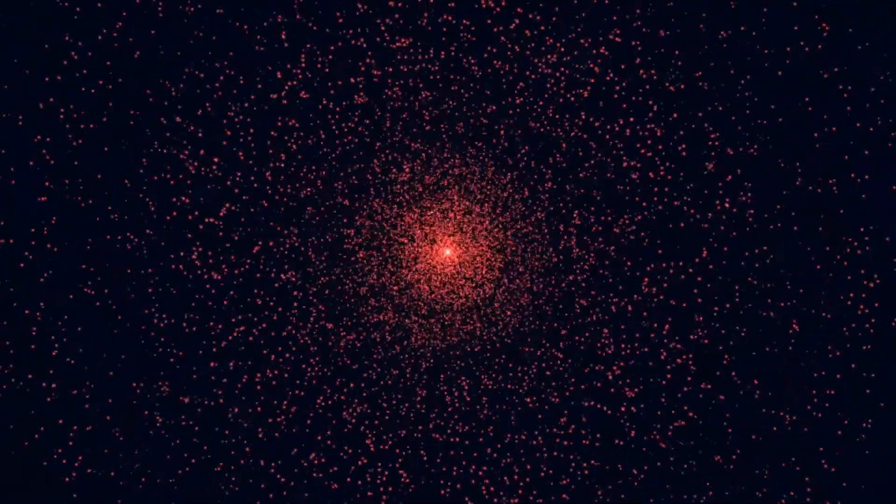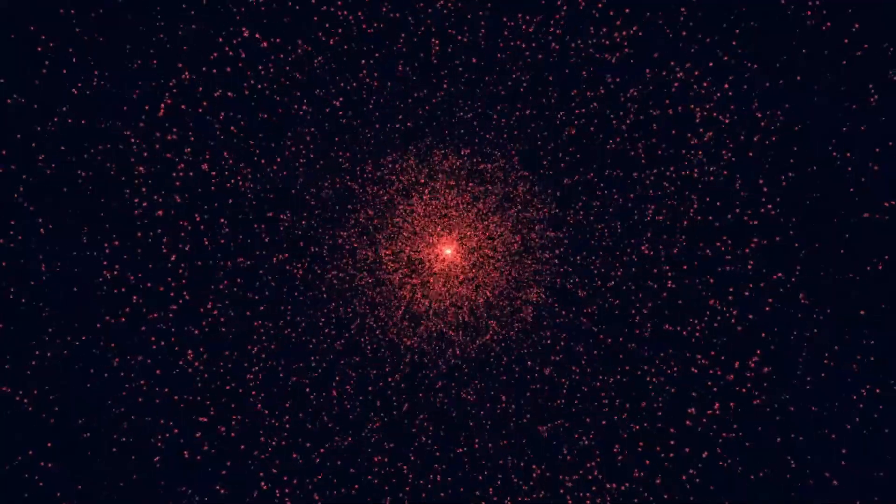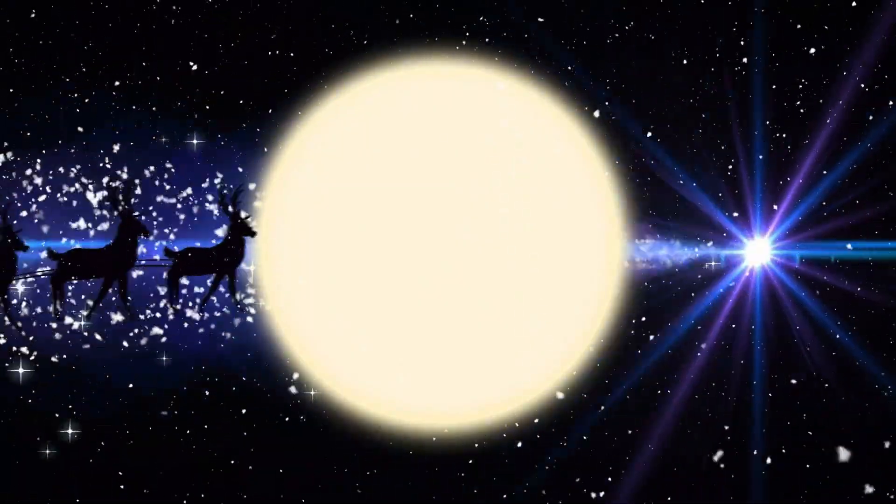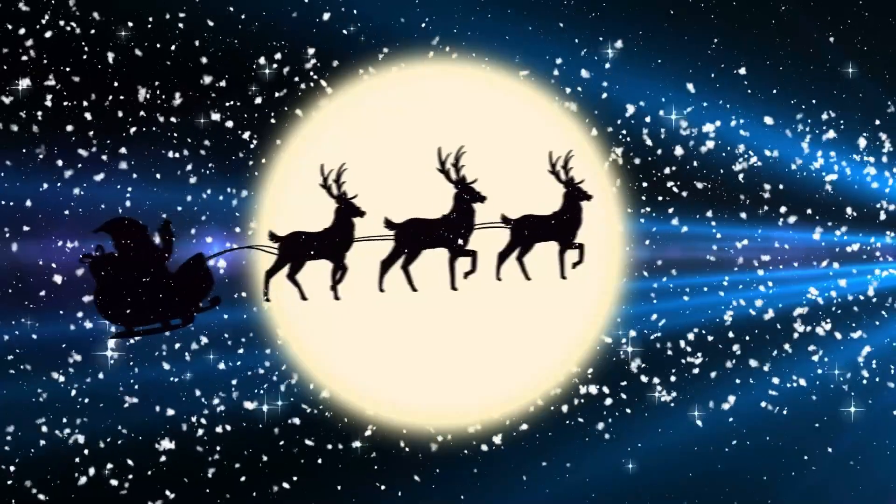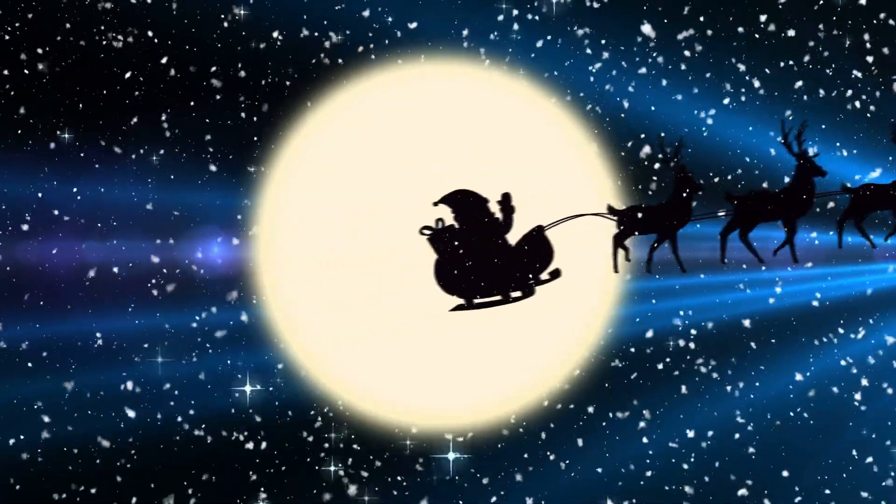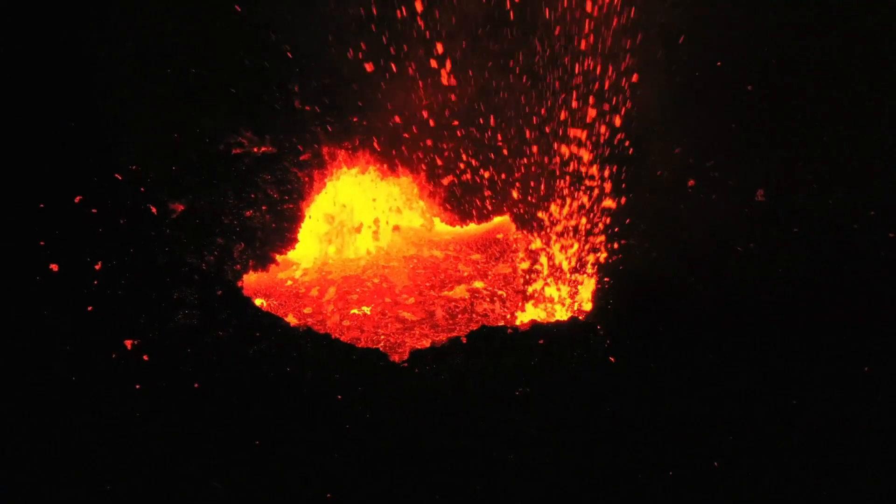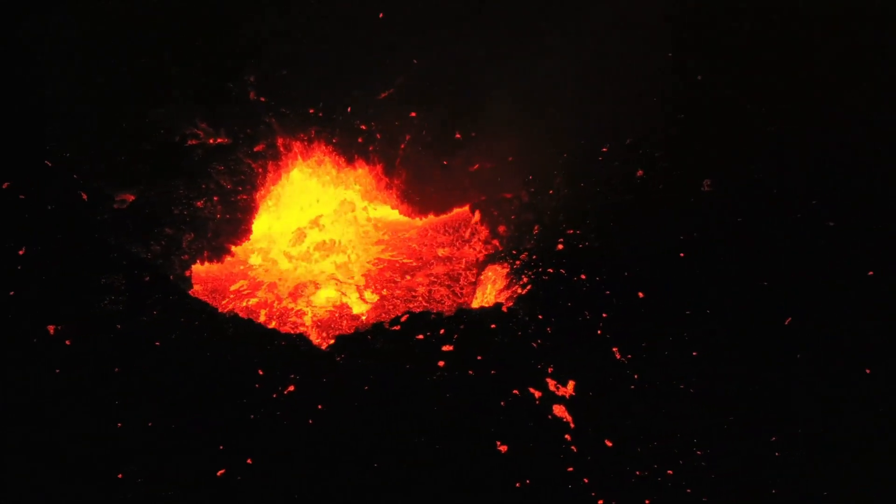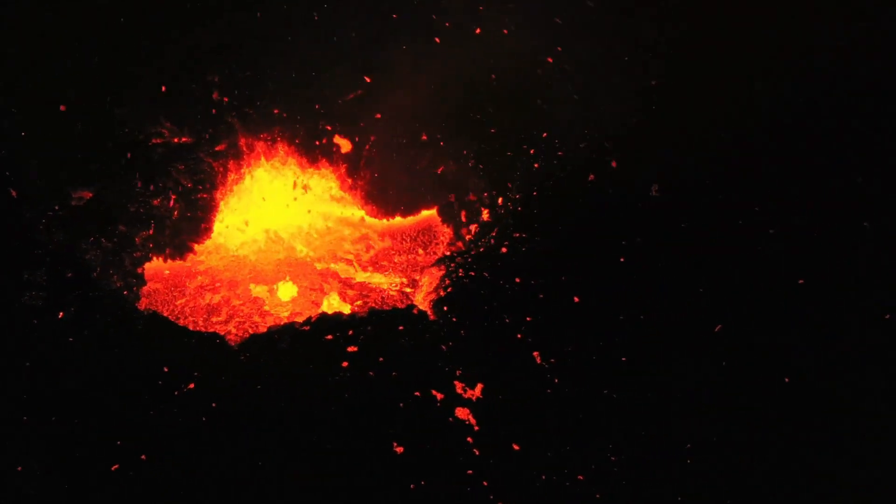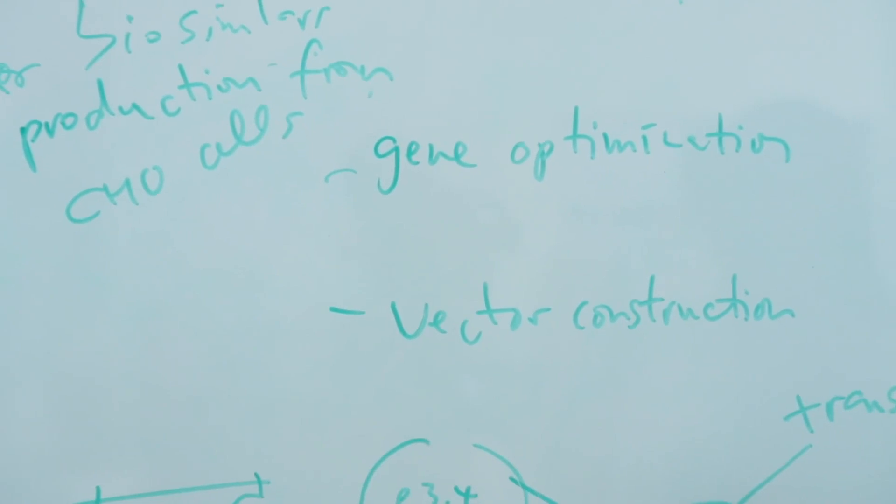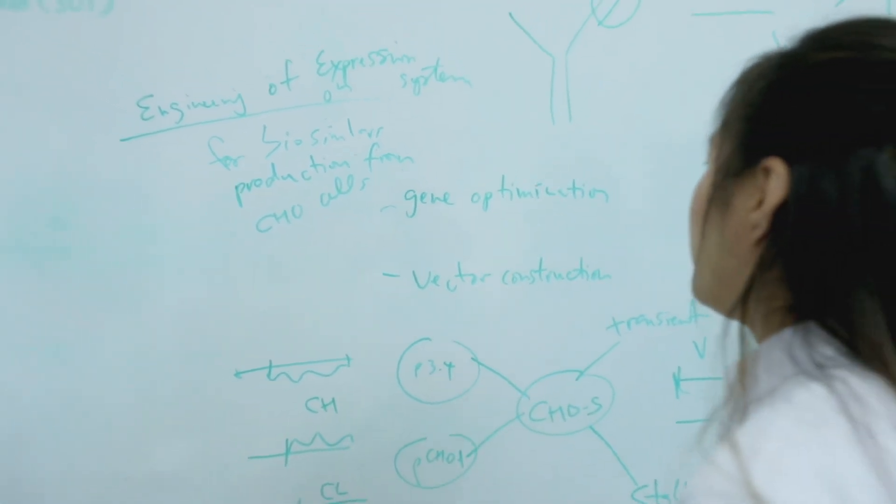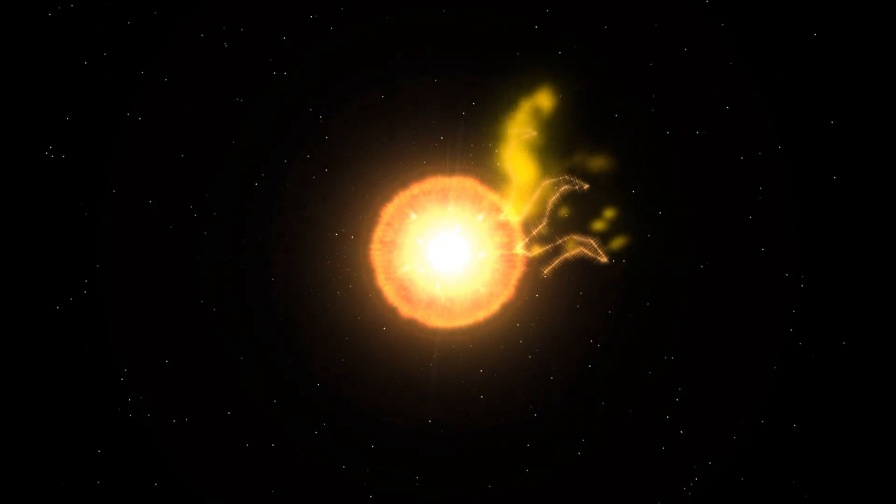What makes this even more remarkable is the way Alcyonius was discovered. It wasn't spotted in a dramatic burst of light or an obvious image. Instead, it was found through meticulous analysis of extremely faint radio signals picked up by LOFAR, the Low Frequency Array, a network of radio telescopes located across Europe. For years, astronomers had detected hints of an unusual source, but the signals were so weak that they were nearly indistinguishable from background noise.